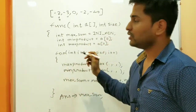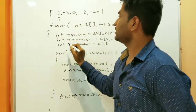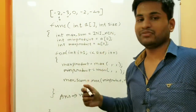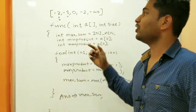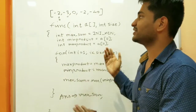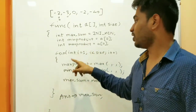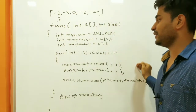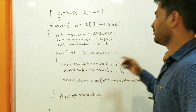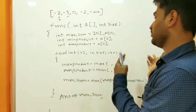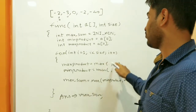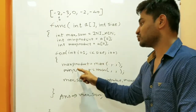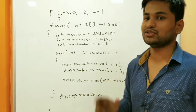We initialize both minimum product and maximum product to a[0], since at the 0th index the only value we have is that element. Then, starting from index 1, we iterate over the array. At every step, max product and min product are computed from three choices.